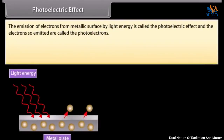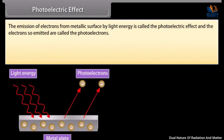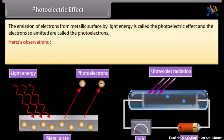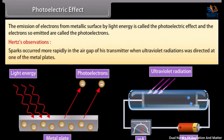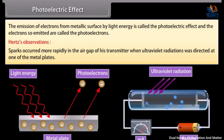The emission of electrons from a metallic surface by light energy is called the photoelectric effect, and the electrons so emitted are called photoelectrons. Hertz observed that while performing an experiment for the production of electromagnetic waves by means of spark discharge, sparks occurred more rapidly in the air gap of his transmitter when ultraviolet radiations were directed at one of the metal plates. Hertz could not explain these observations, but other scientists did — they said that the cause was the emission of electrons from the metal plate due to the incidence of high-frequency light. This is the photoelectric effect.